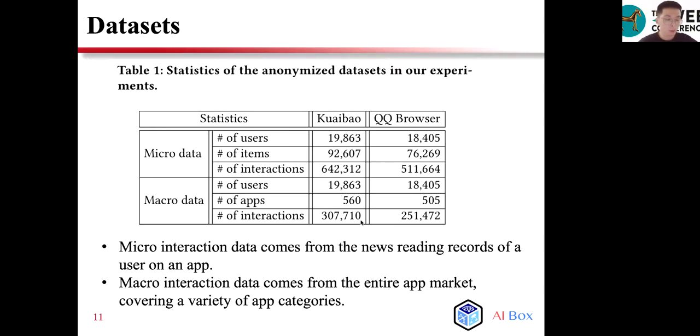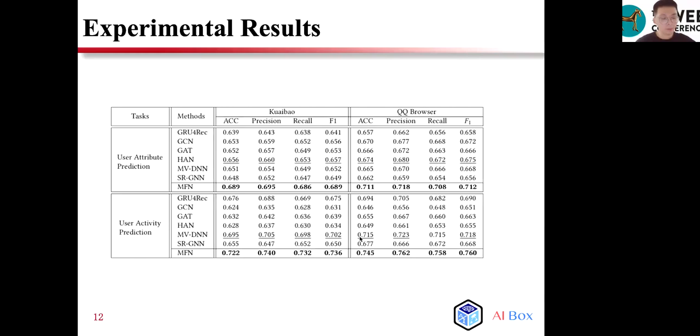Next, we introduce our experiment settings and present the results and analysis. We collect the behavior data of users from two news apps, Tencent and QQ Browser. Micro-interaction data comes from the news reading records of users on each app. Macro-interaction data comes from the entire app market, covering a variety of app categories. We compare the proposed micro-macro fusion network with the following methods. Our model achieves the best performance on all the metrics across different datasets and tasks.